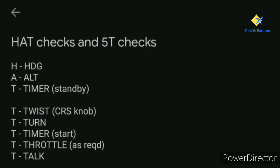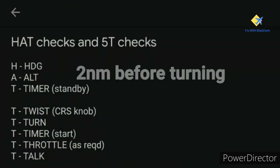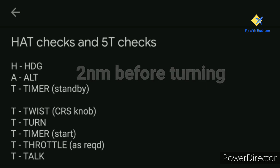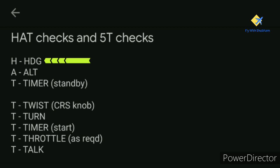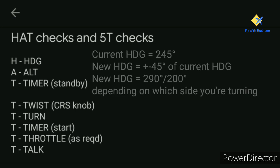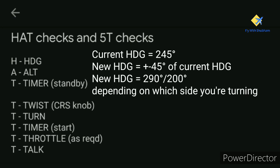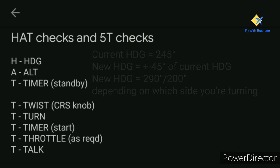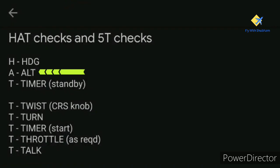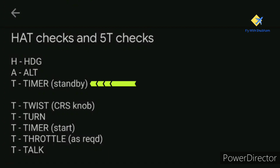The HAT checks are generally performed 2 nautical miles before the turning point. If you need to perform a procedure turn at 5 nautical miles, you will do the HAT checks at 3 nautical miles. H is the heading, calculated with a 45-degree change — for example, on heading 245, the new heading will be 290 for a right turn or 200 for a left turn. A is the altitude to maintain as per the procedure charts, and T is the timer set to standby.